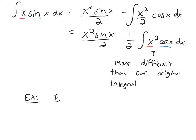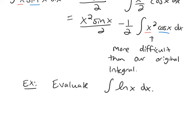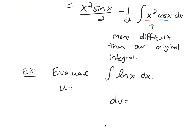Let's evaluate the integral of ln(x) dx. I need to split this into u and dv, but inside my integral I really only have one function: ln(x). If I put it in the dv spot, I'd need to know the antiderivative of ln(x), which is exactly what the problem is asking. So when you only have one term, put it in the u spot.